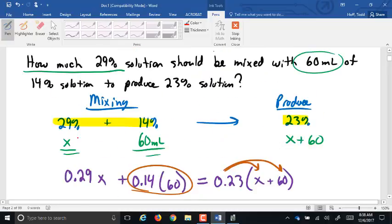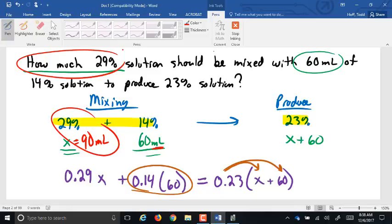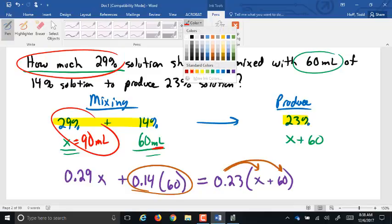So I go back up. X was the amount of the 29%. That's in milliliters. That's 90 milliliters. Is that what we were looking for? Yes, it is. So 90 milliliters is how much 29% we need to mix. How many of you had that right? A few of you? Are we getting better?